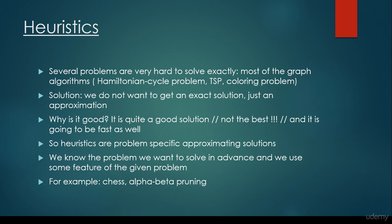So what about heuristics? We know that several problems are very hard to solve exactly. These are the so-called NP-complete problems, so most of the graph algorithms fall into this category, such as the Hamiltonian cycle problem — where we would like to find a closed cycle in a graph in the sense that we would like to visit every vertex exactly once.